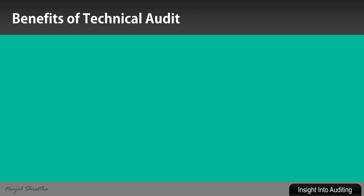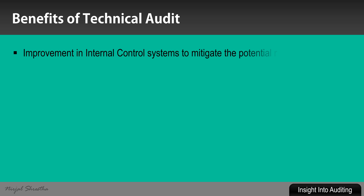Benefits of technical auditing: There are many benefits, but the major ones include improvement in internal control systems to mitigate potential risk — in other words, it strengthens the internal control systems designed and implemented by management to mitigate potential and associated risk. It also helps to improve the quality of service by reviewing the project implementation process and ensuring that such processes pursue industry-based standards, resulting in improved service quality.